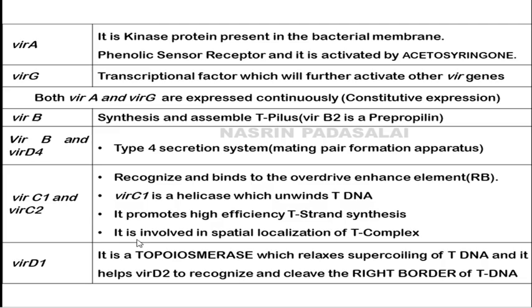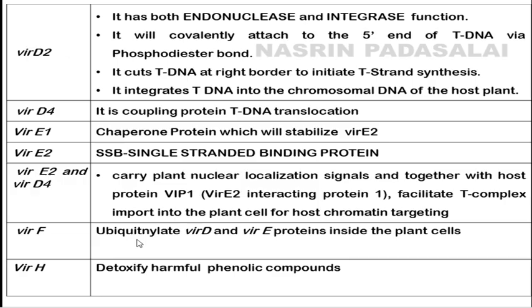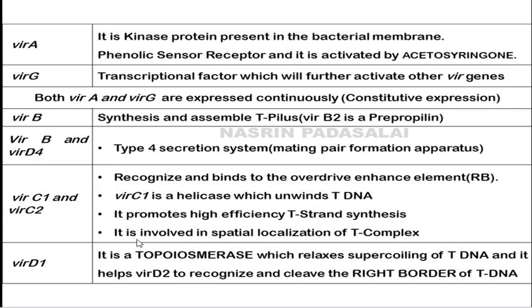VirD1 also helps VirD2 in recognizing and cleaving the right border of T-DNA. VirD2 has two activities: first, endonuclease activity — it cuts the T-DNA at the right border to initiate single-stranded T-DNA synthesis; second, integrase function — it helps integrate the T-DNA into the chromosomal DNA of the host cell. VirD2 is covalently attached to the five-prime end of the T-DNA via a phosphodiester bond.